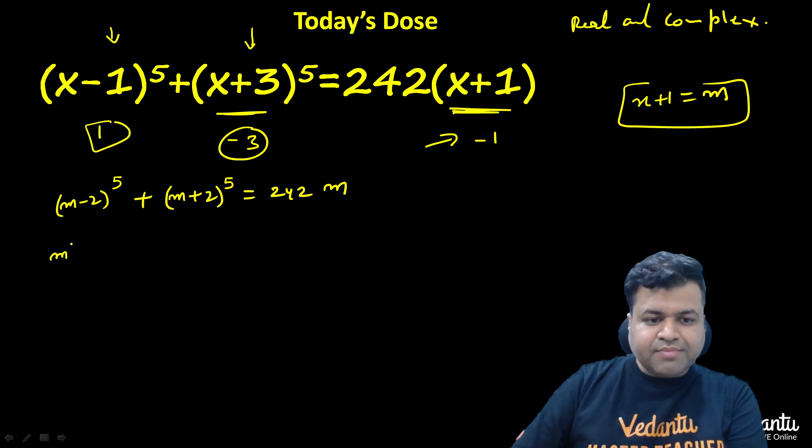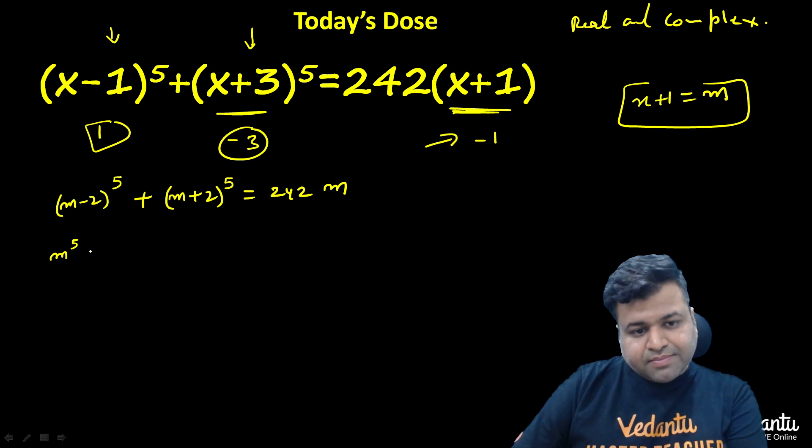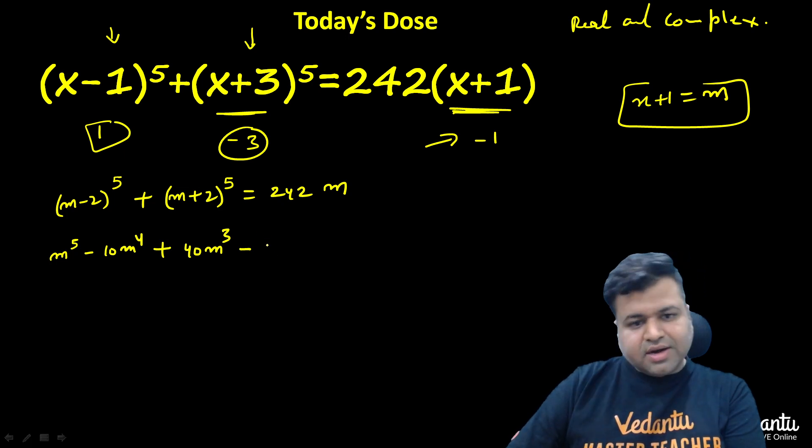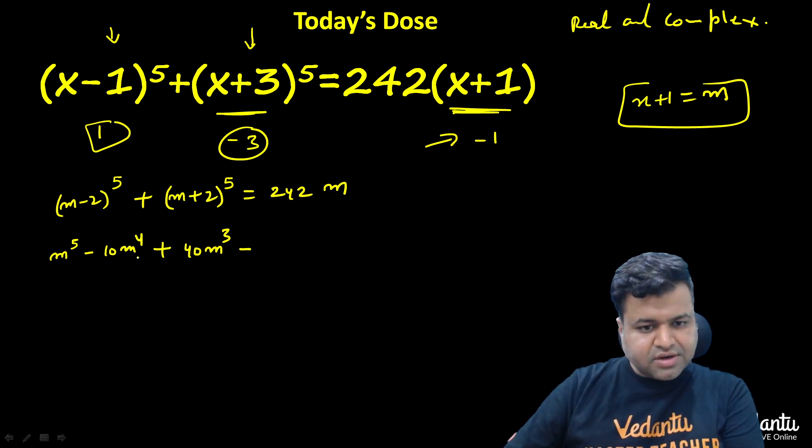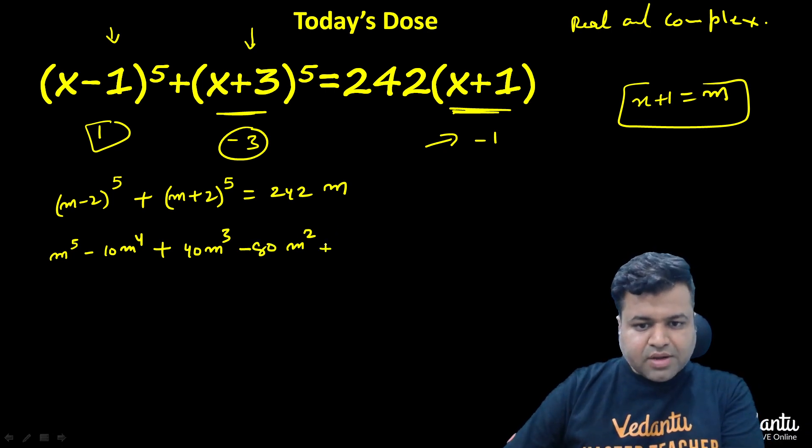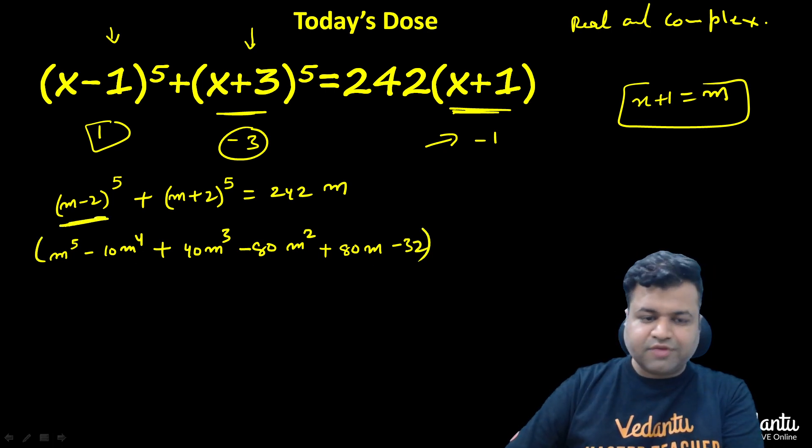We will get m^5 minus 10m^4 + 40m^3 - 80m^2 + 80m - 32. This is the expansion of (m-2)^5, binomially expanded here.